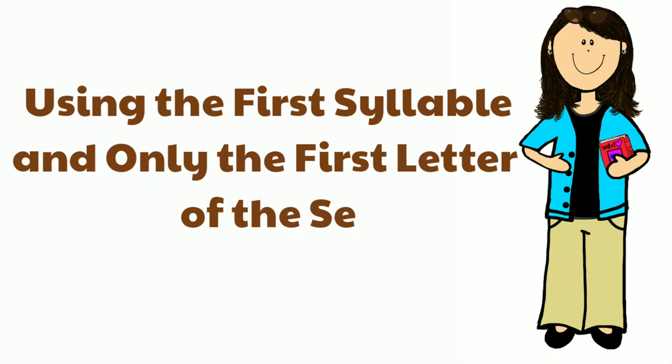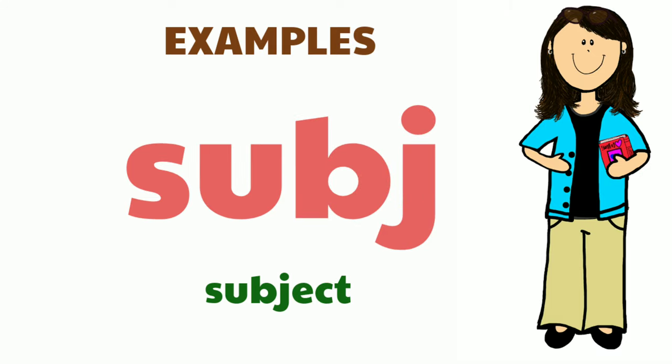Using the first syllable and only the first letter of the second to abbreviate. Examples: subject, conservative.